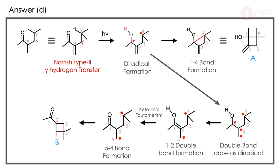The answer is D. Let us see how. The starting material is the system which is appropriate for the Norrish Type 2 reaction, because it has a gamma hydrogen and a carbonyl group, so there is definitely a possibility. So here we write alpha and beta. The gamma hydrogen is also written near to the oxygen, so the proximity hydrogen transfer occurs and the diradical is formed.